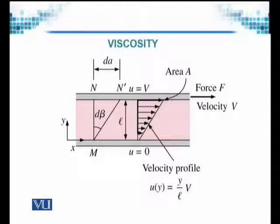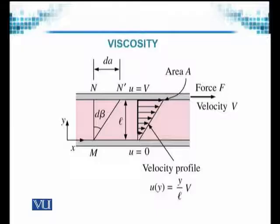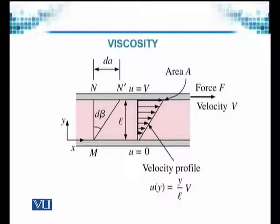As we go up, the velocity in the X direction — the U component — slightly increases, as shown by arrows. As it goes upward to the top, right where the upper plate is moving, the fluid is also moving with the same velocity as the plate. The velocity of the upper plate becomes equal to the X component of the fluid velocity, so U is equal to V.